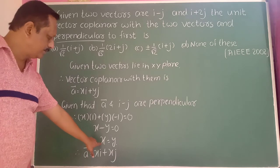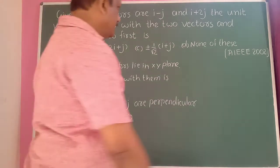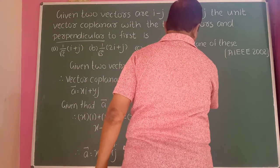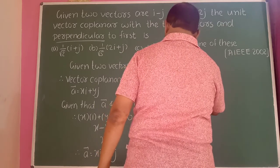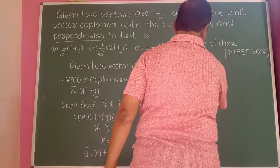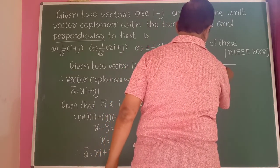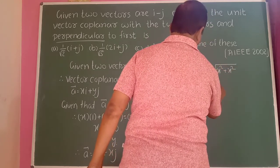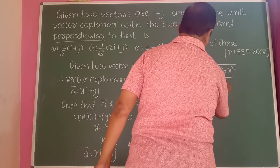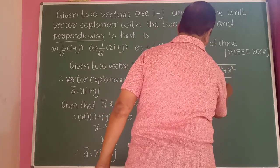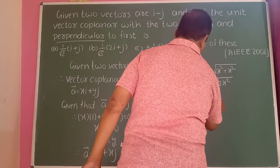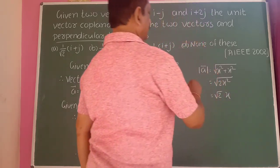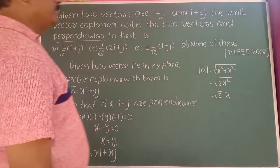Taking the modulus: modulus of a-bar equals root of x squared plus x squared, which is root of 2x squared, equals root 2 into x.